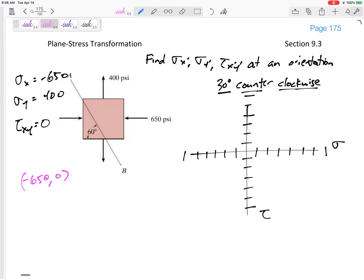All right, so my starting point: negative 650, 0. Right, starting point sigma X, tau, negative 650, 0. So if these are hundreds, if you hadn't already drawn this, draw your axes: 100, 200, 300, 600, 650 right here.